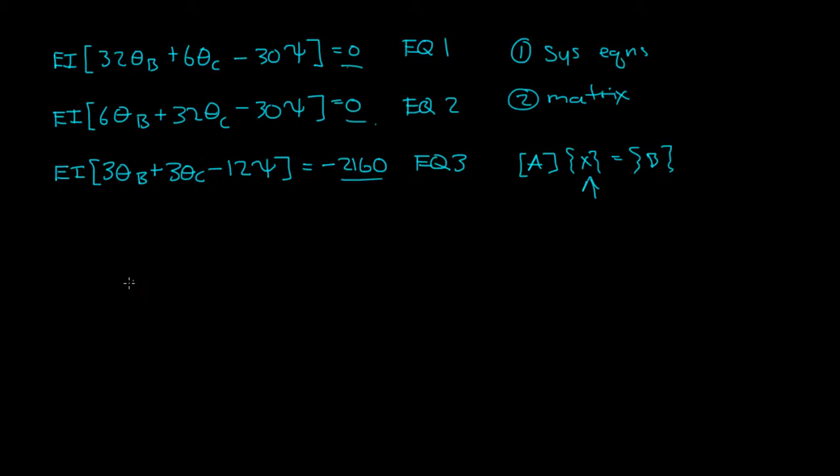If I put this in matrix form, what I'm going to do first is factor out all these EIs. So I have this matrix here of 32, 6, negative 30, 32, 6, negative 30. Then you have 6, 32, negative 30, 6, 32, negative 30. And then down here you have 3, 3, negative 12, 3, 3, negative 12.